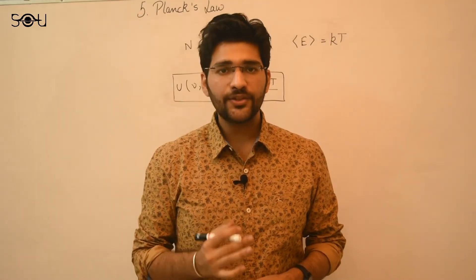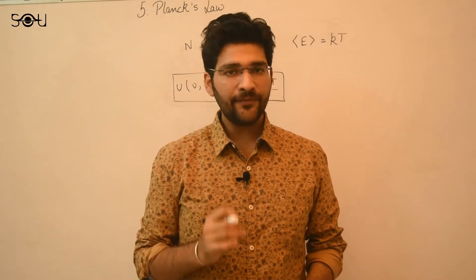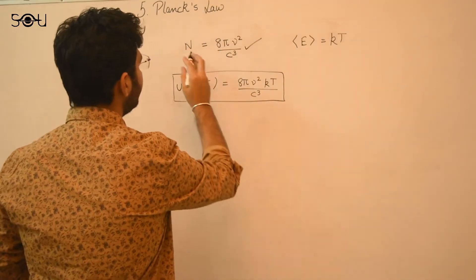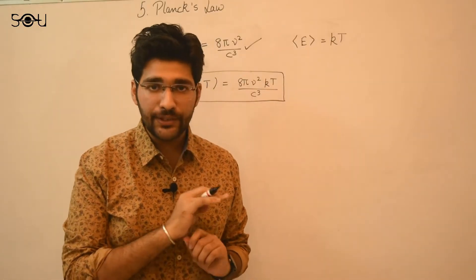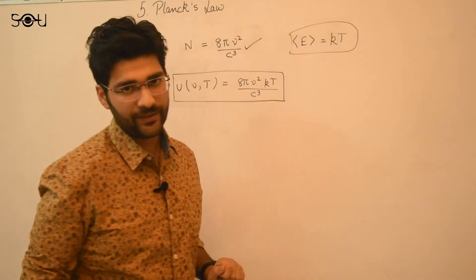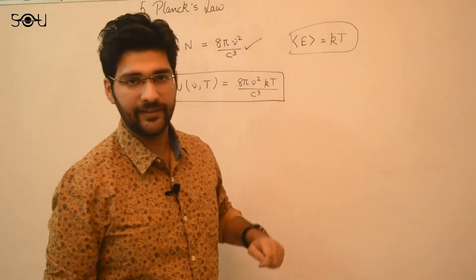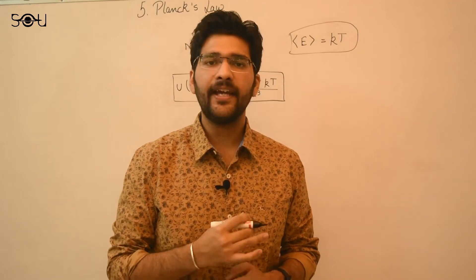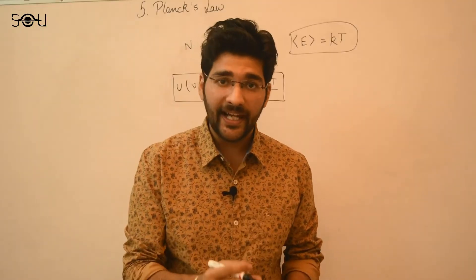Planck spent weeks to find a solution to this problem, which he later described as the most strenuous work of his life. Planck finally found a flaw in the Rayleigh-Jeans law. The number of modes of vibrations that Rayleigh and Jeans calculated was absolutely correct — the mathematics had no flaw. The problem was in calculating the average energy of the harmonic oscillators. Rayleigh and Jeans used classical physics, and had assumed that the harmonic oscillators can have any amount of energy, so the energy spectrum is continuous.